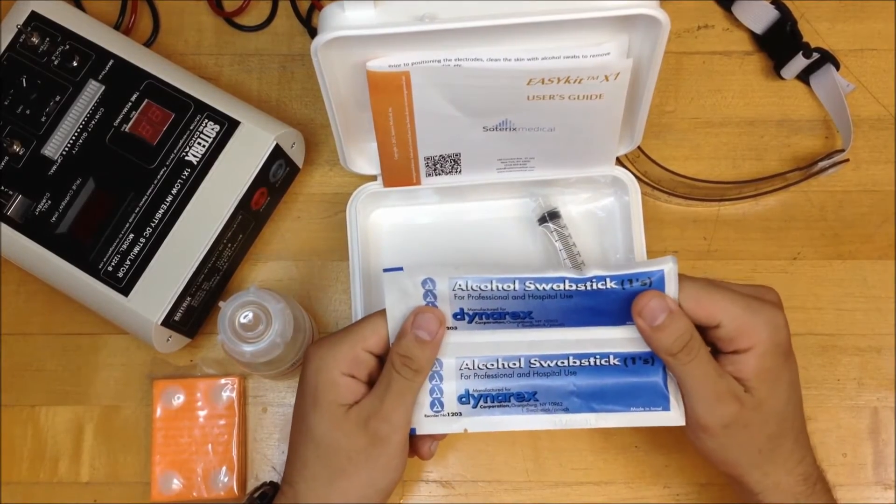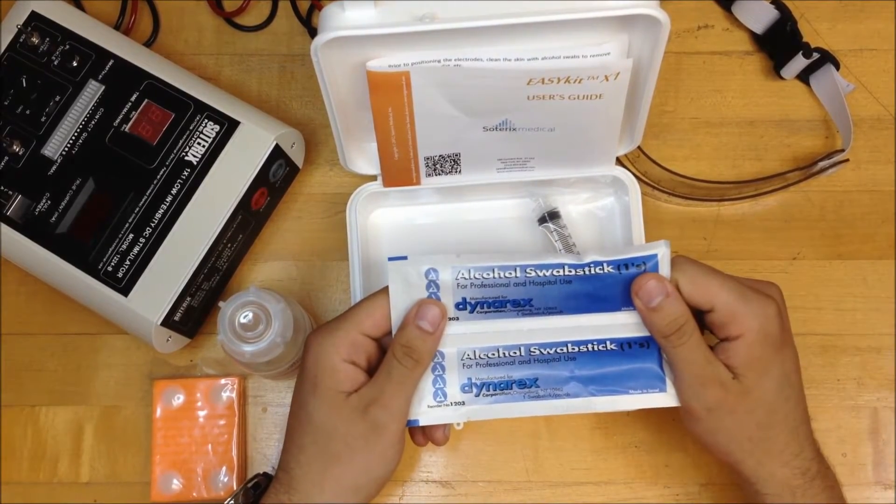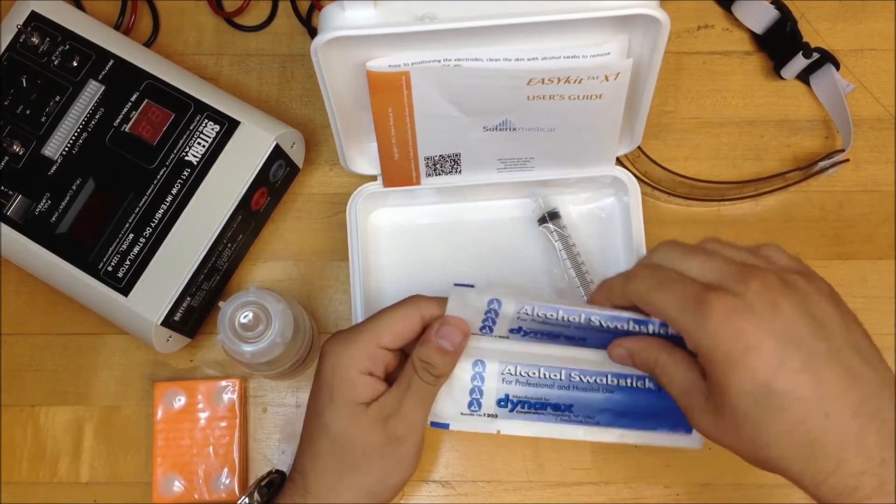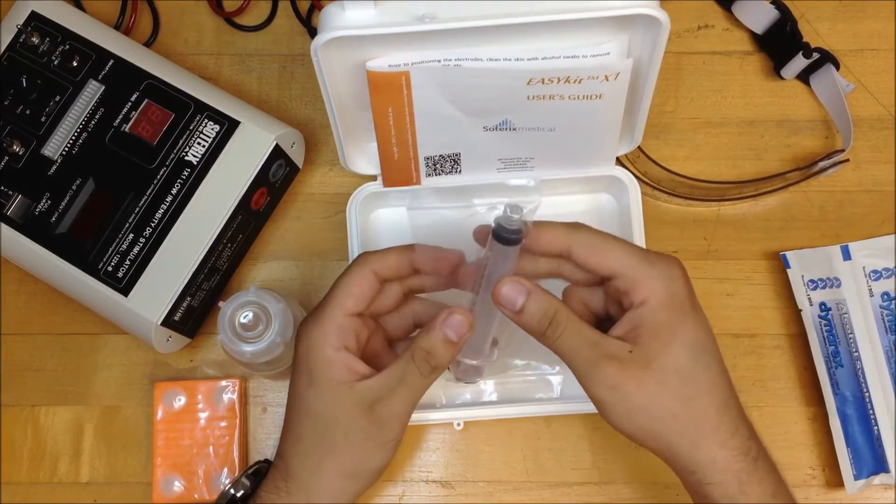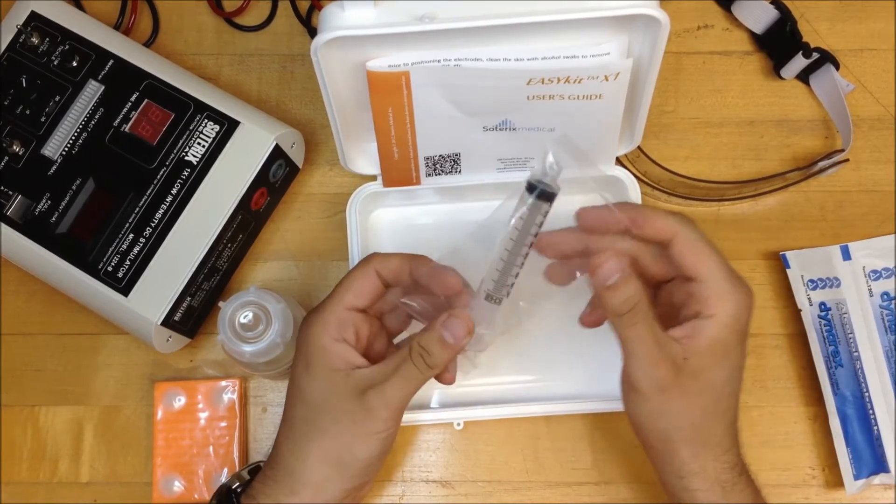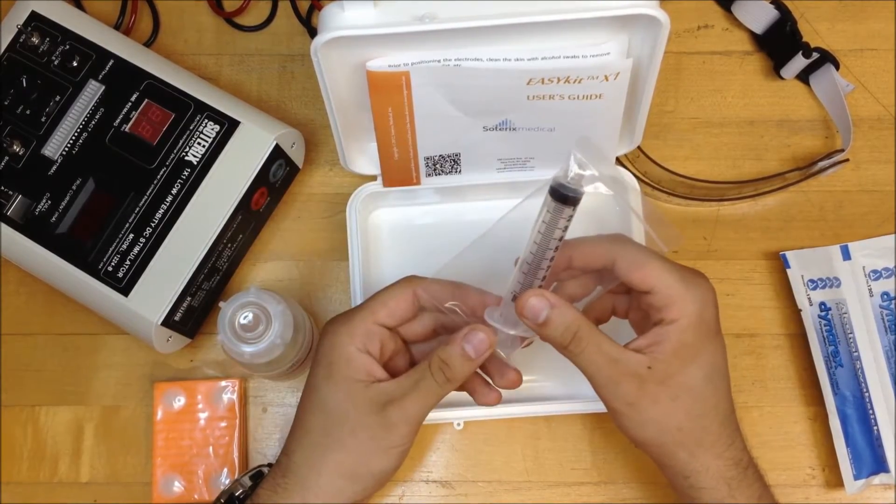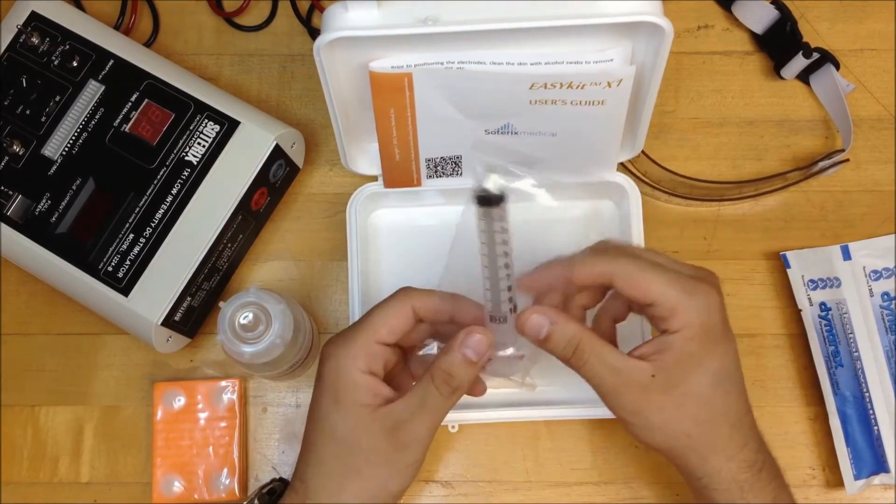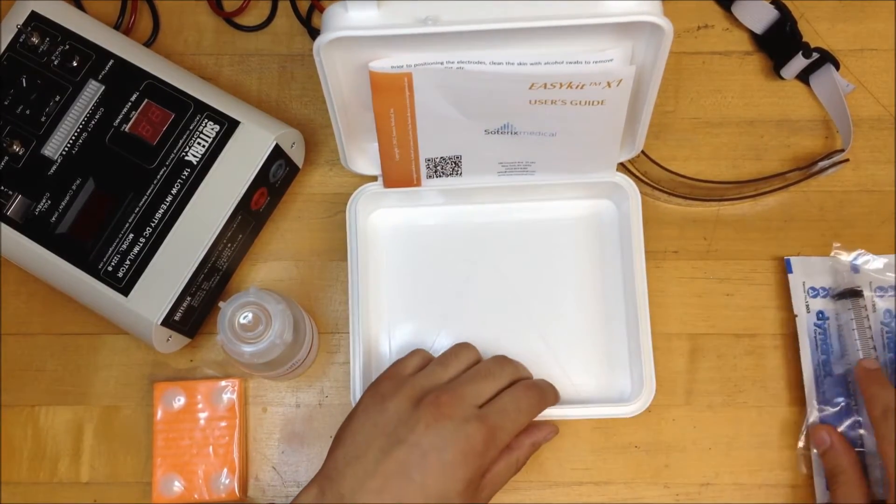Alcohol swab sticks, so you can clean the surface of the skin before you use the Easy Pads. And finally, they give you a 100ml syringe, so you can add extra saline solution during stimulation, which we will get into in a minute.